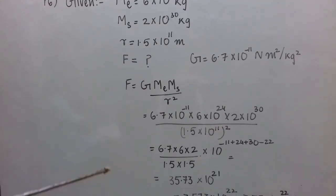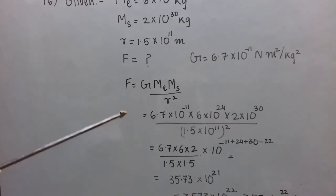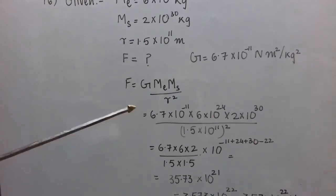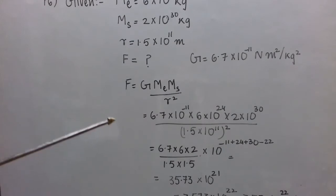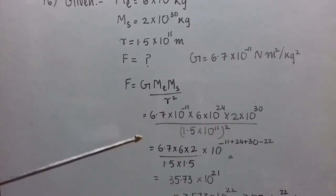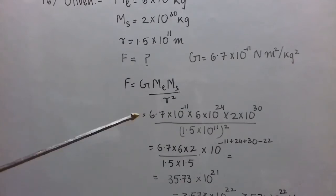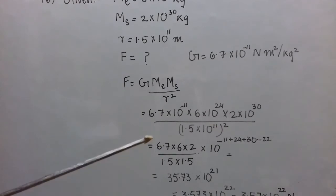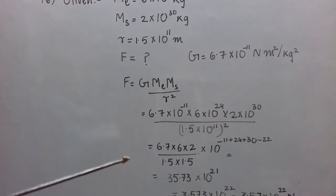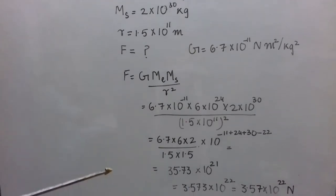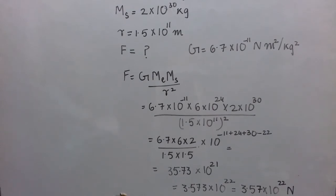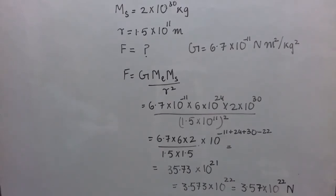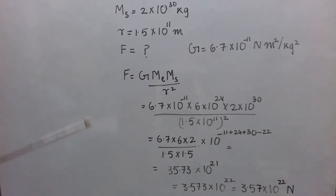Putting the values: 10⁻¹¹, 10²⁴, 10³⁰ in the numerator, and in the denominator r² gives 10²². Taking the powers: minus 11 plus 24 plus 30 minus 22, and doing the rest of the calculation, the answer comes out to be 3.573 × 10²². Rounding off to two decimal places, the required answer is 3.57 × 10²² Newton.